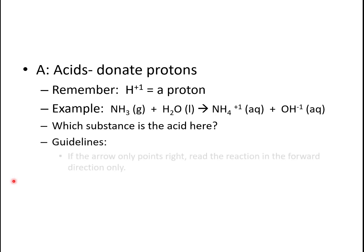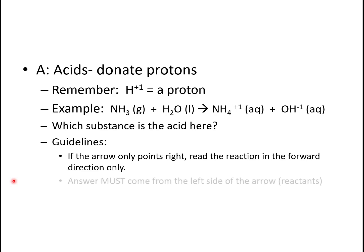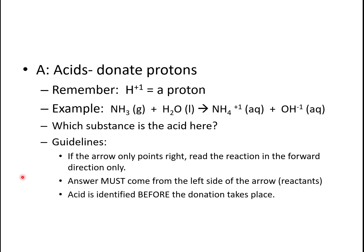So how do we know what's going on? We use some guidelines. First, if the arrow in your equation only points to the right, always read your equation in the forward direction only. The answer must come from the left side of the equation — these are the things doing the donating and accepting. On the right we have our products. Our acid is always identified before the donation takes place.